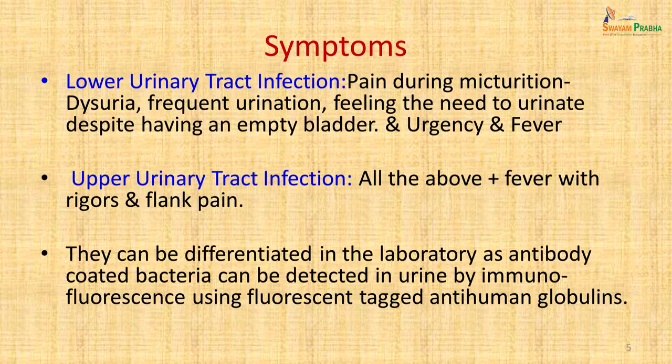The two infections can be differentiated in the laboratory as antibody-coated bacteria can be detected in urine by immunofluorescence using fluorescent-tagged anti-human globulins. This will occur only in upper urinary tract infection because as the bacteria pass through the kidneys, they get coated with antibodies and can be detected. In lower urinary tract infection, these antibody-coated bacteria cannot be detected.